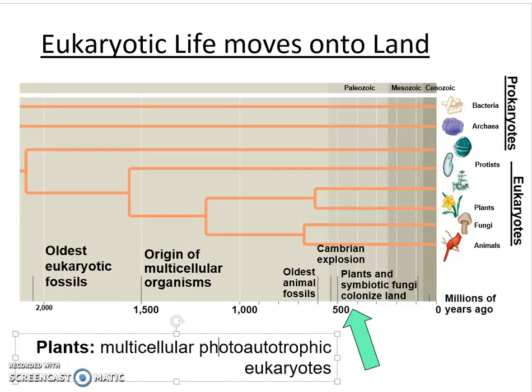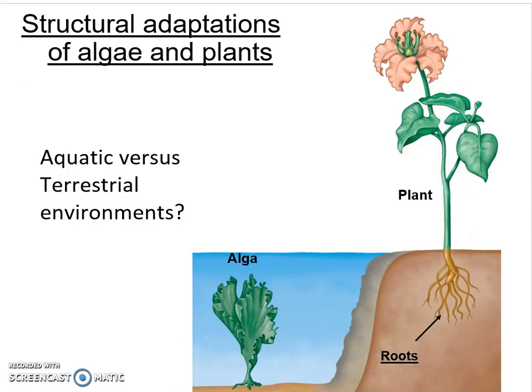In this video, we are going to continue to look at the evolution of different forms of life and continue on where we're going to look at this process of eukaryotic life moving on to the land. We saw how the fungi were able to colonize land, and they were also colonizing land along with our plants. When looking at the plant kingdom, this is characterized by multicellular eukaryotic organisms that are photoautotrophs — they get their energy from light and can automatically access their carbon source.